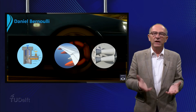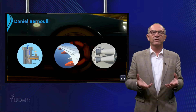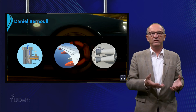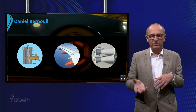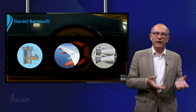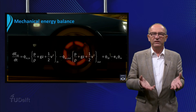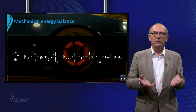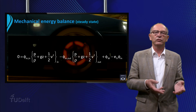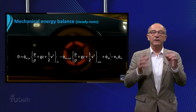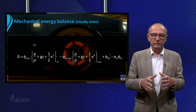The simplification of the mechanical energy balance lies in the fact that under steady state conditions, the friction losses are neglected. Looking at the mechanical energy balance under steady state where we neglect friction losses and the contribution of the stirrer, this gives us a reduced mechanical energy balance.